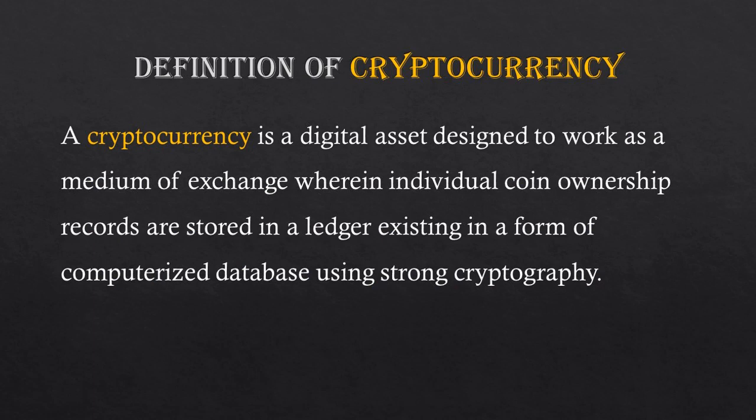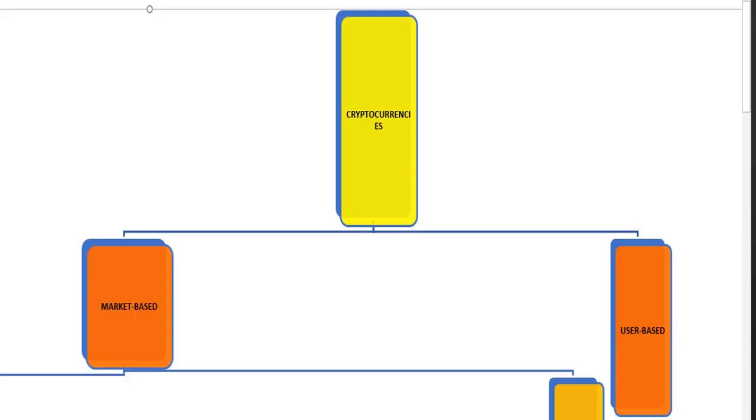What is cryptocurrency? A cryptocurrency is a digital asset designed to work as a medium of exchange, wherein individual coin ownership records are stored in a ledger existing in the form of a computerized database using strong cryptography.